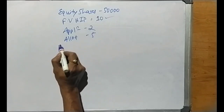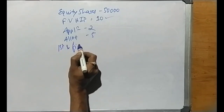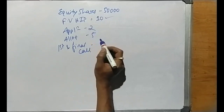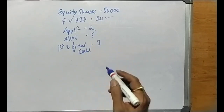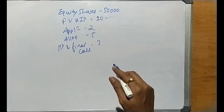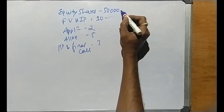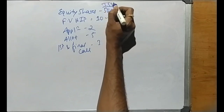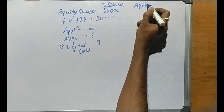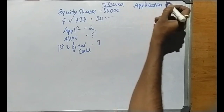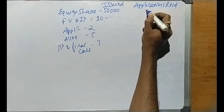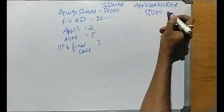Application money was received on 55,000 shares. So the company issued 50,000 equity shares, but applications received were for 55,000 shares. The excess number is 5,000 shares. As stated in the problem, these 5,000 excess application amounts are to be refunded immediately. All other amounts were duly received.